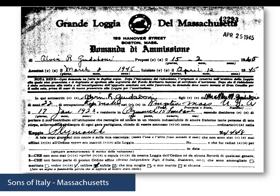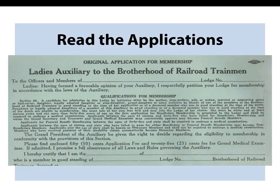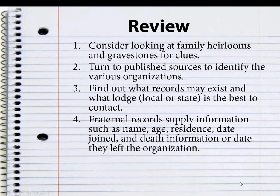When it comes to reading applications, especially for the auxiliaries, you want to see what the qualifications for membership are, because it could extend to grandchildren or adopted children. So in review: look at what you've got — family heirlooms, pictures of gravestones, etc. Turn to those published sources to identify your organization, then see what records may exist with the lodge, either local or state. If they don't have insurance, they're only going to give you name, age, residence, the date they joined, and any death or departure information. It's only the insurance ones that will give you any family history.